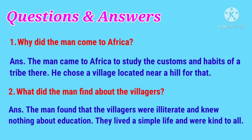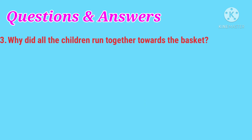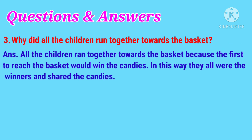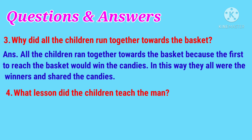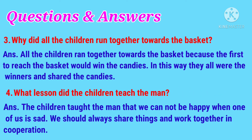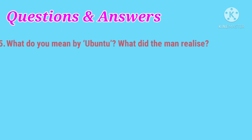They lived a simple life and were kind to all. Question three: why did all the children run together towards the basket? All the children ran together because the first to reach the basket would win the candies — in this way they all were winners and shared the candies. Question four: what lesson did the children teach the man? The children taught the man that we cannot be happy when one of us is sad; we should always share things and work together in cooperation. Question five: what do you mean by Ubuntu?